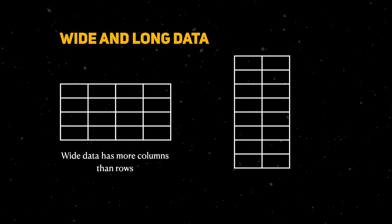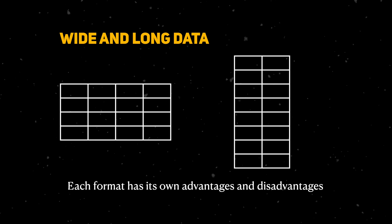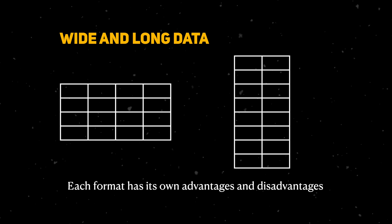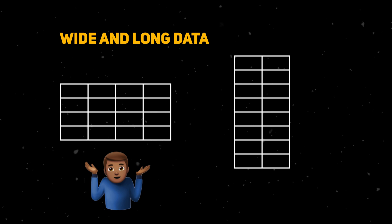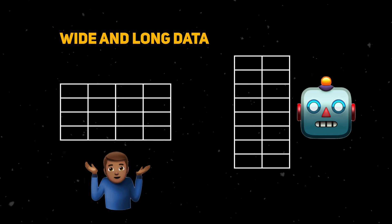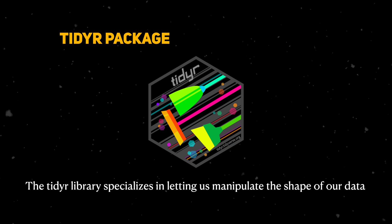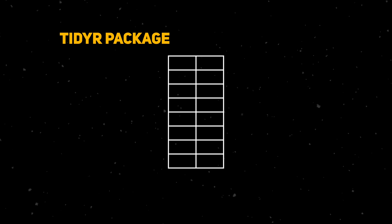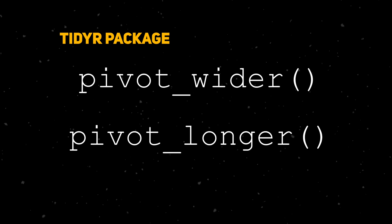In data analysis we have a notion of wide and long data. Wide data has more columns than rows, while long data is the opposite. These formats have different advantages — wide data is easier for humans to read, but long data is easier for computers to use. The tidyr library provides functions that allow us to change the shape of our data, including moving between wide and long formats. The most-used functions are pivot_wider and its sister function pivot_longer.